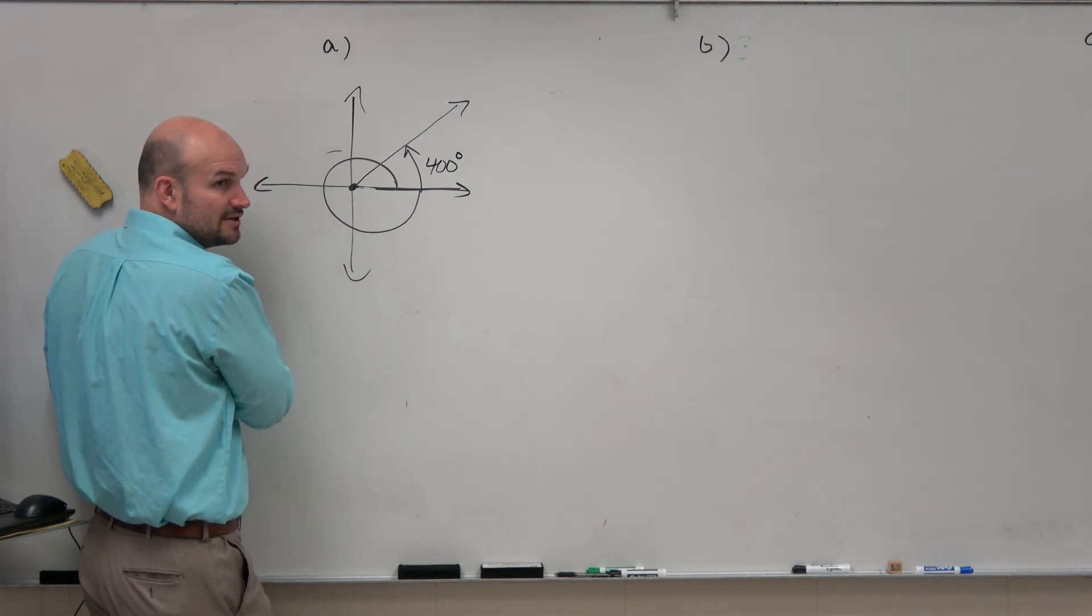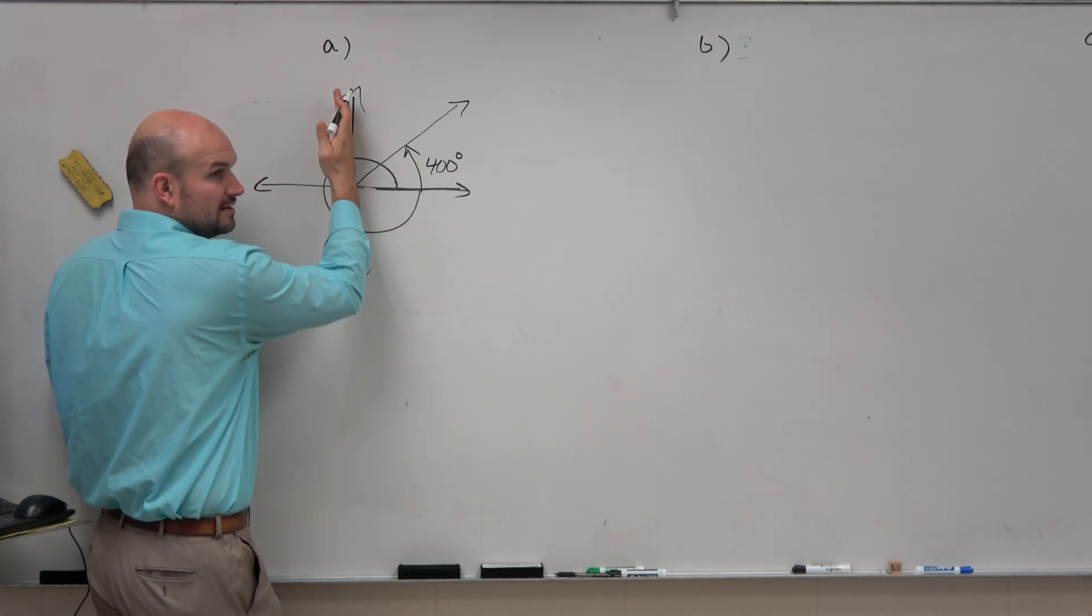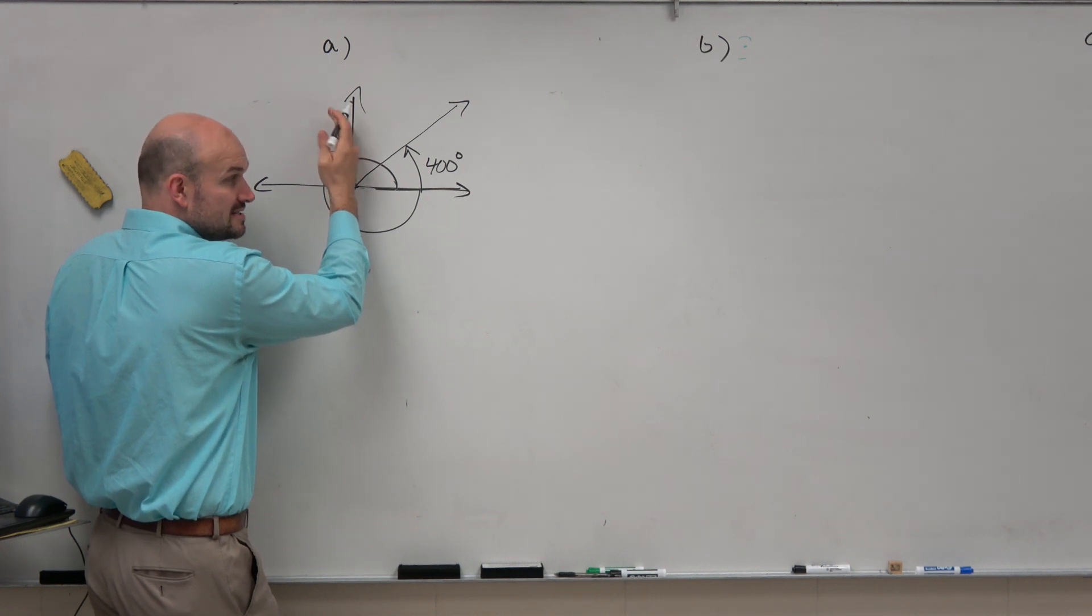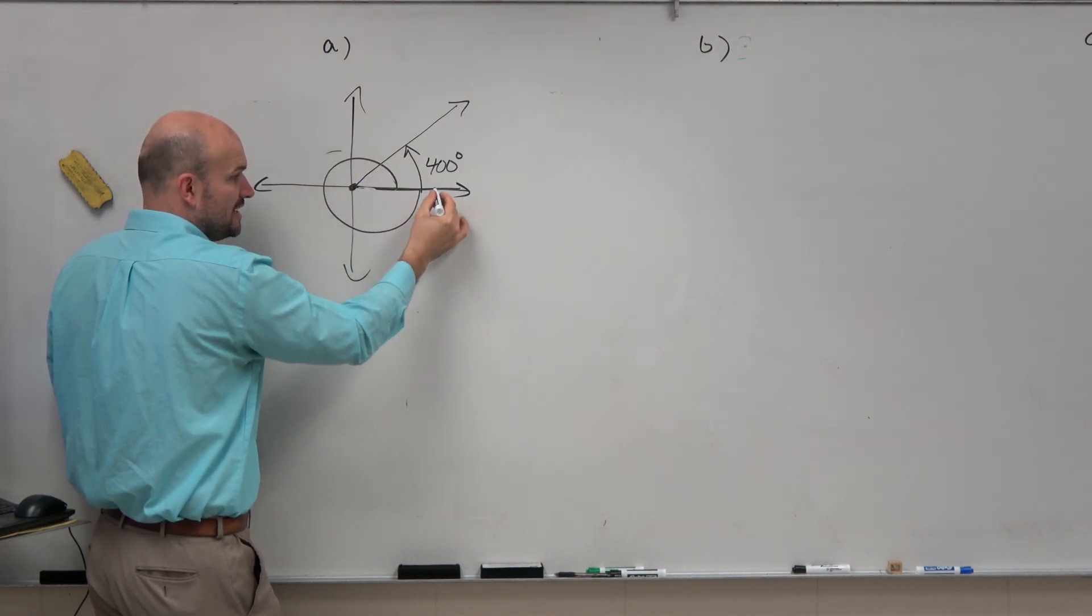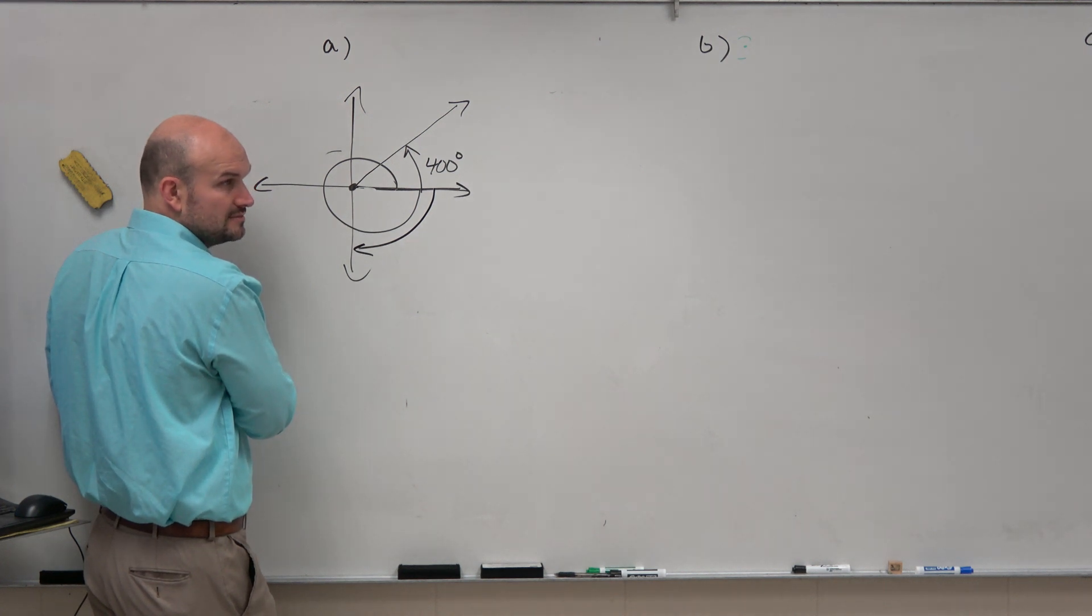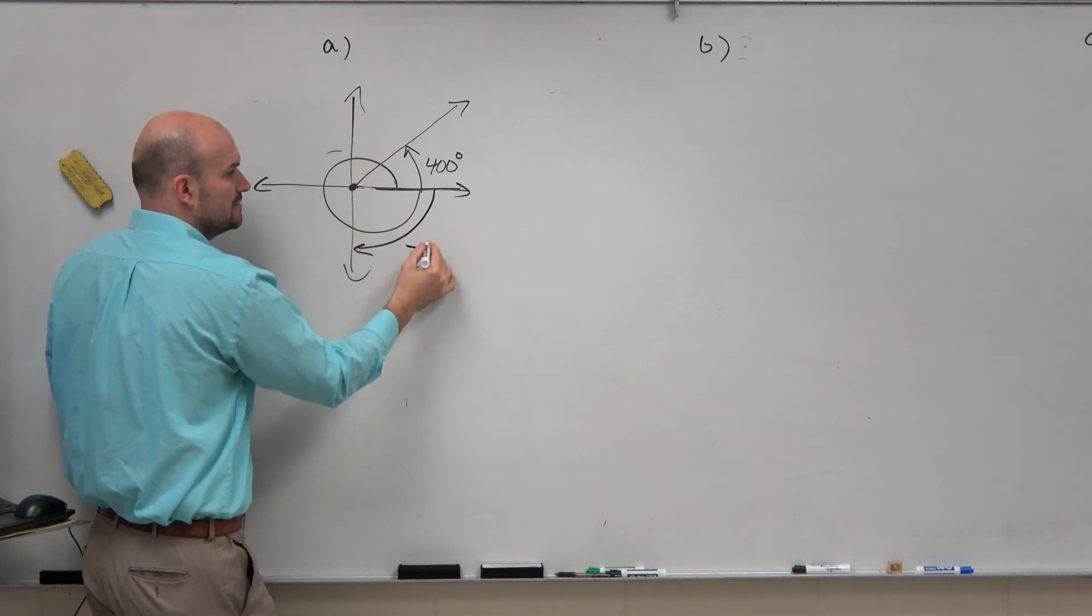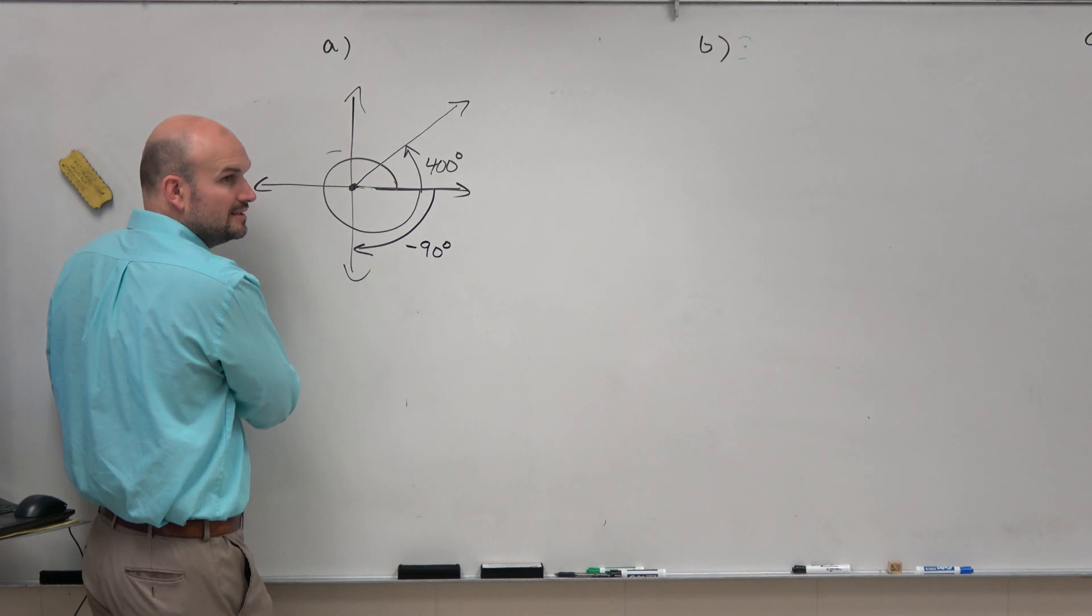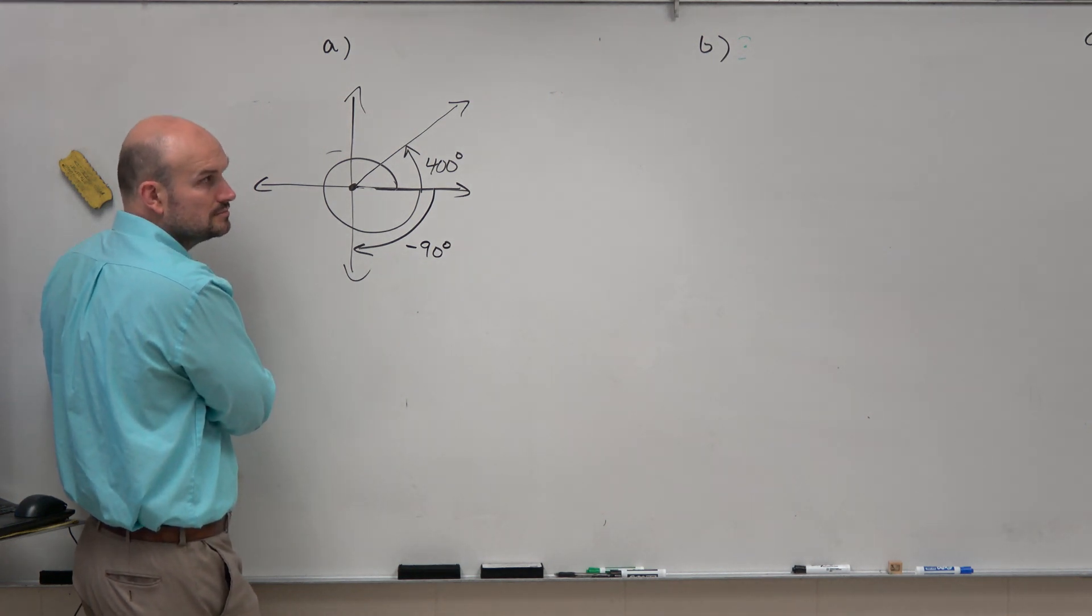So then what about if I need to graph negative 90 degrees? Well, I know 90 degrees is from here to here. But if I'm doing negative 90 degrees, that's going to start here and then just rotate down to there, which would produce a 90 degree angle. So that's negative 90 degrees.